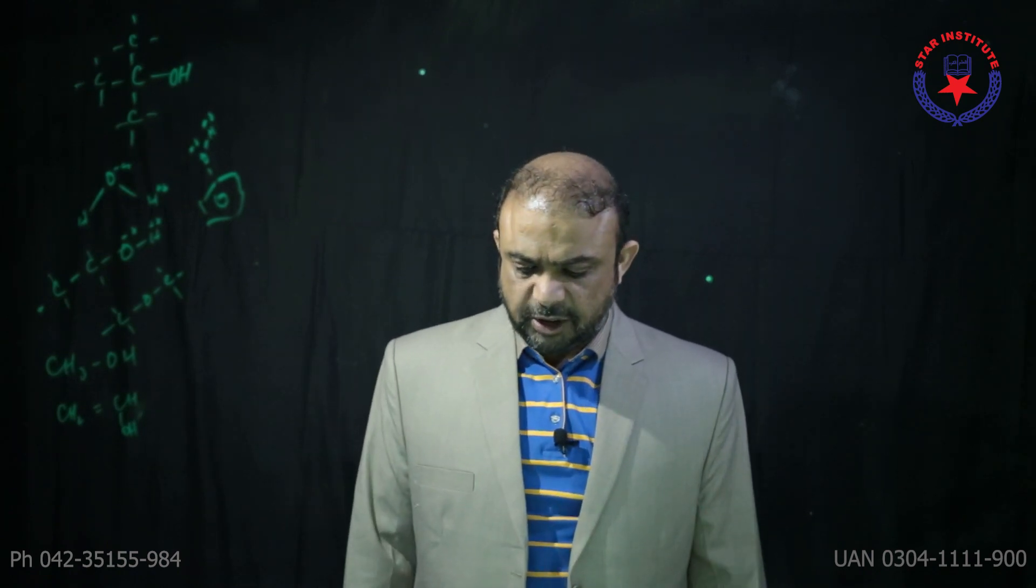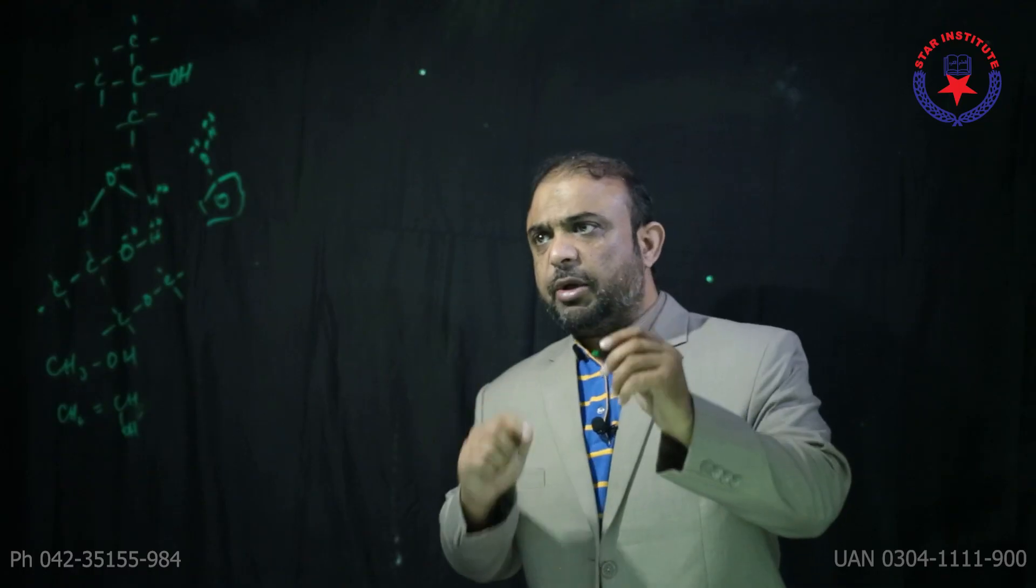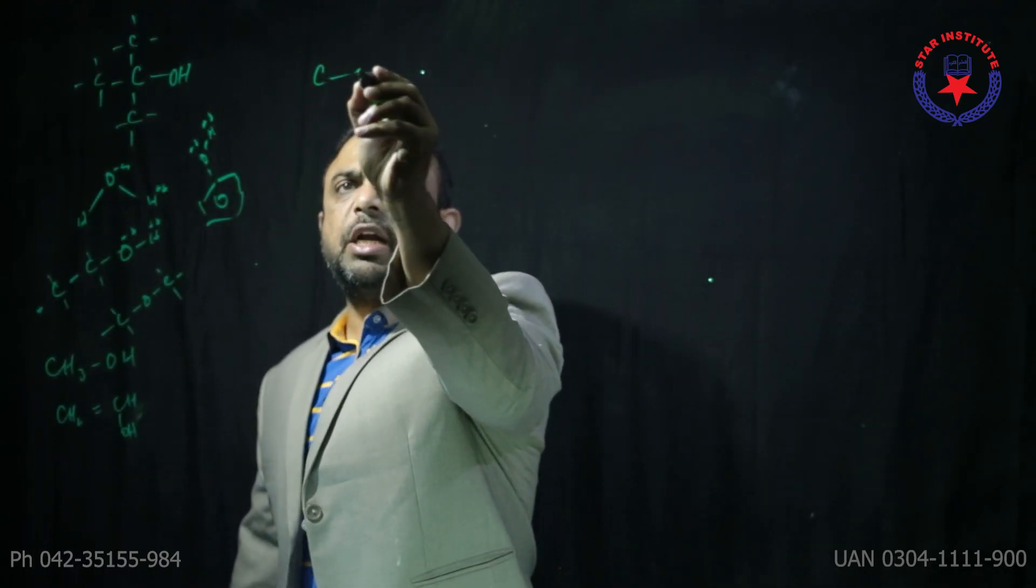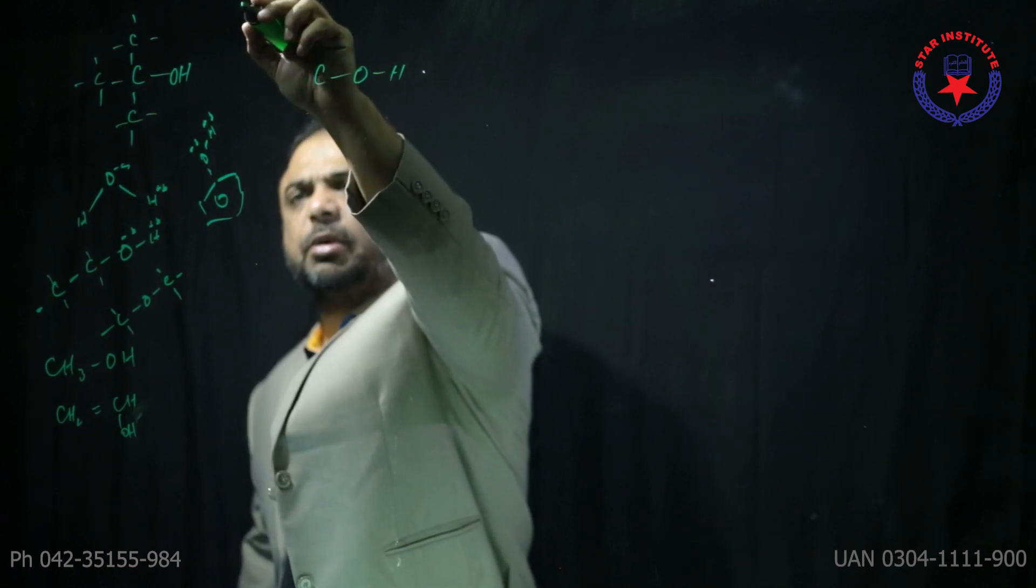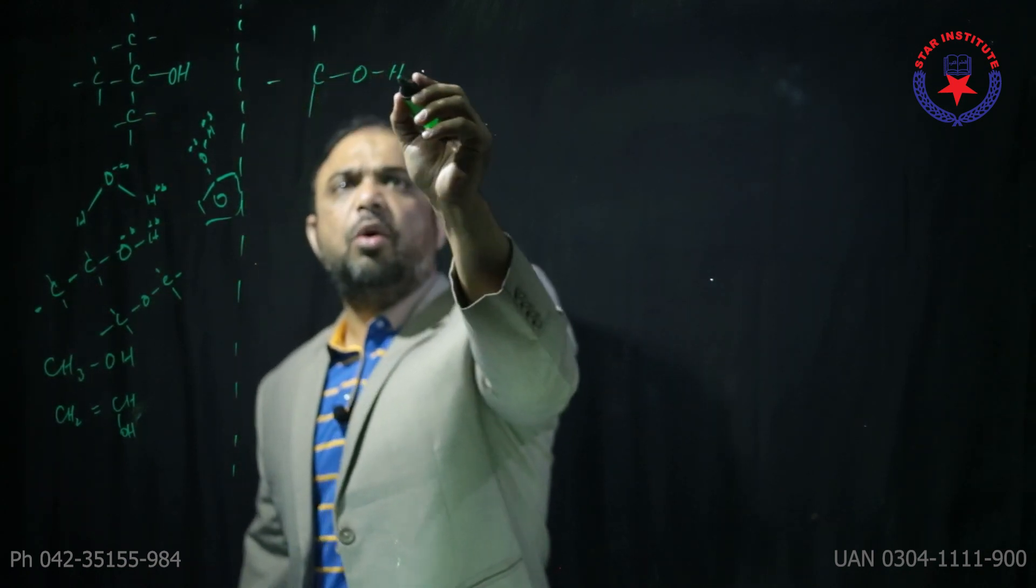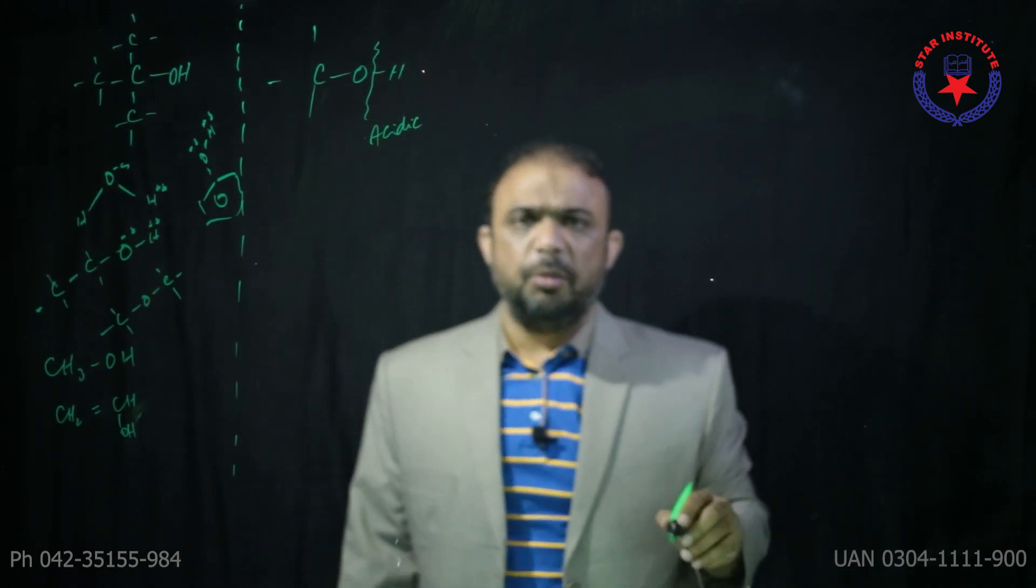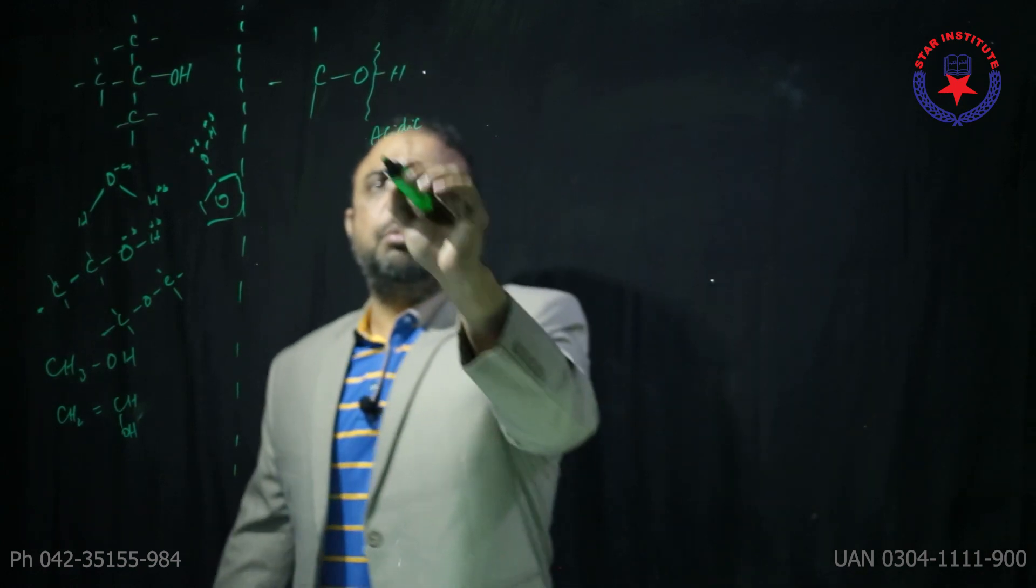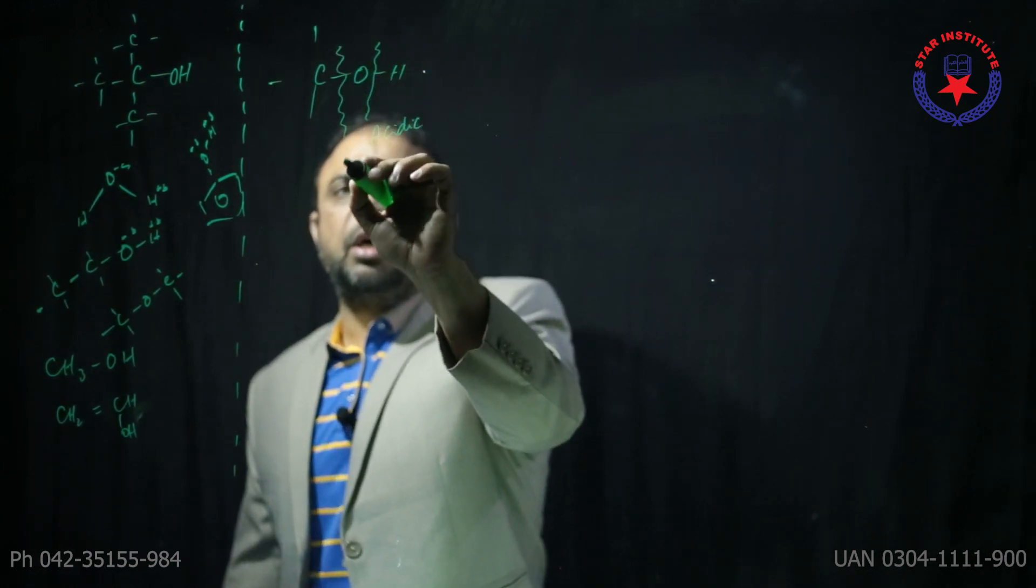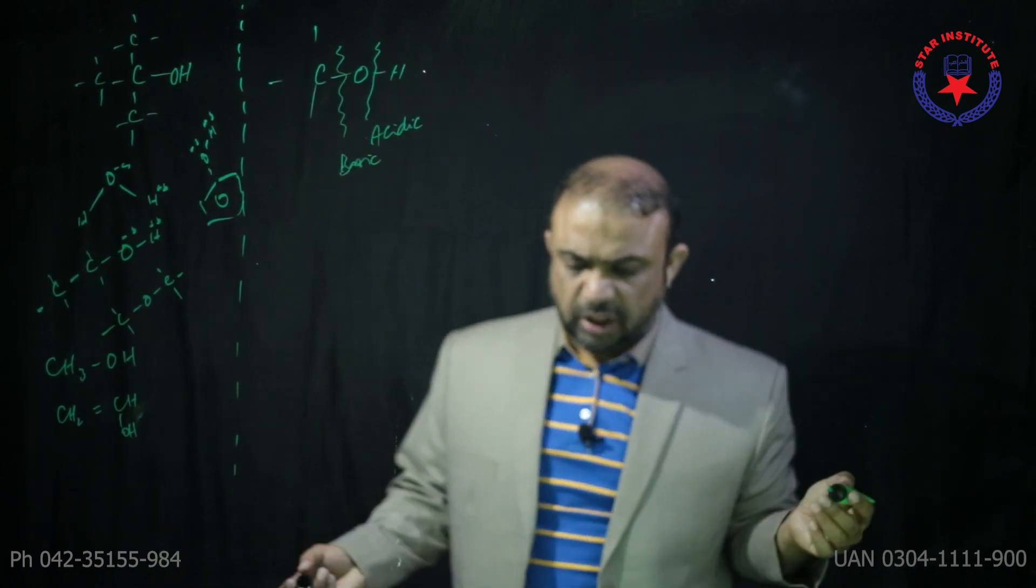Question thirteen: the acidic reactivity of an alcohol is due to the possibility of bond breaking between O and H. The proton can be released. But there's also a possibility of breaking the bond between C and O, which represents the basic reactivity of alcohol.